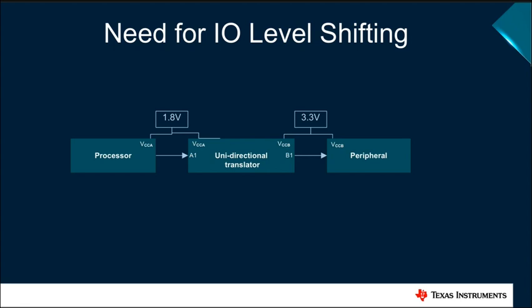The level shifting device in this example helps to shift the output of the processor up to meet the input requirements of the peripheral device. Conversely, down translation would be needed for the 3.3 volt to 1.8 volt direction. In many applications, unidirectional level shifting such as this plays a critical role in interconnecting core signal chain components of a system.